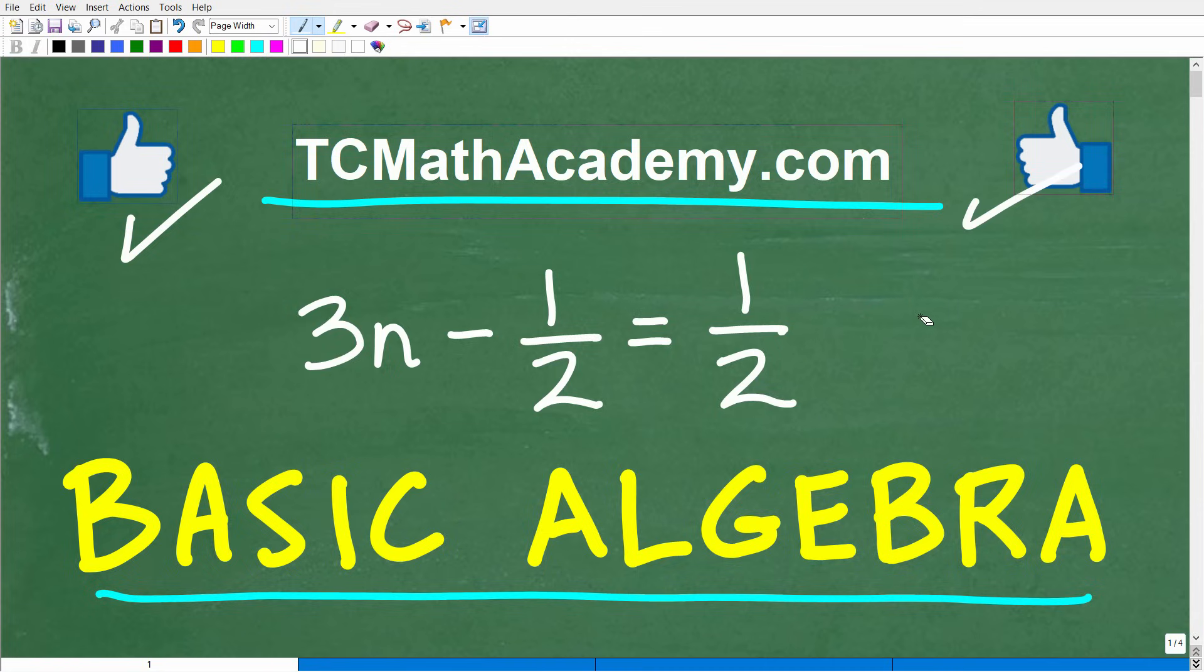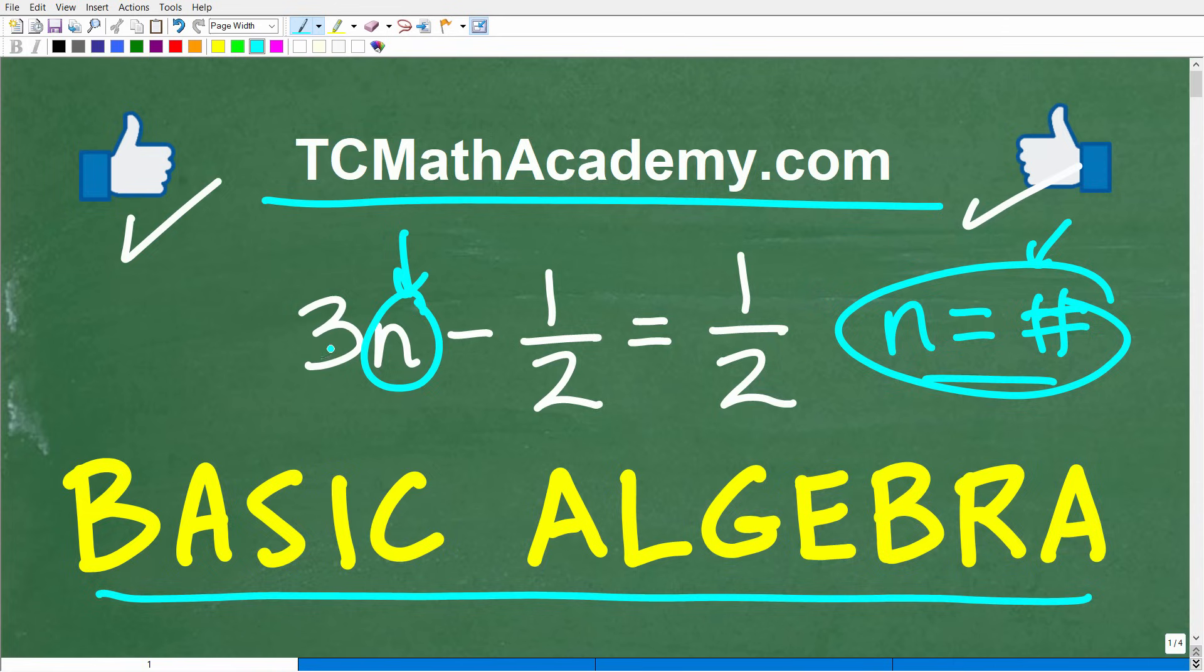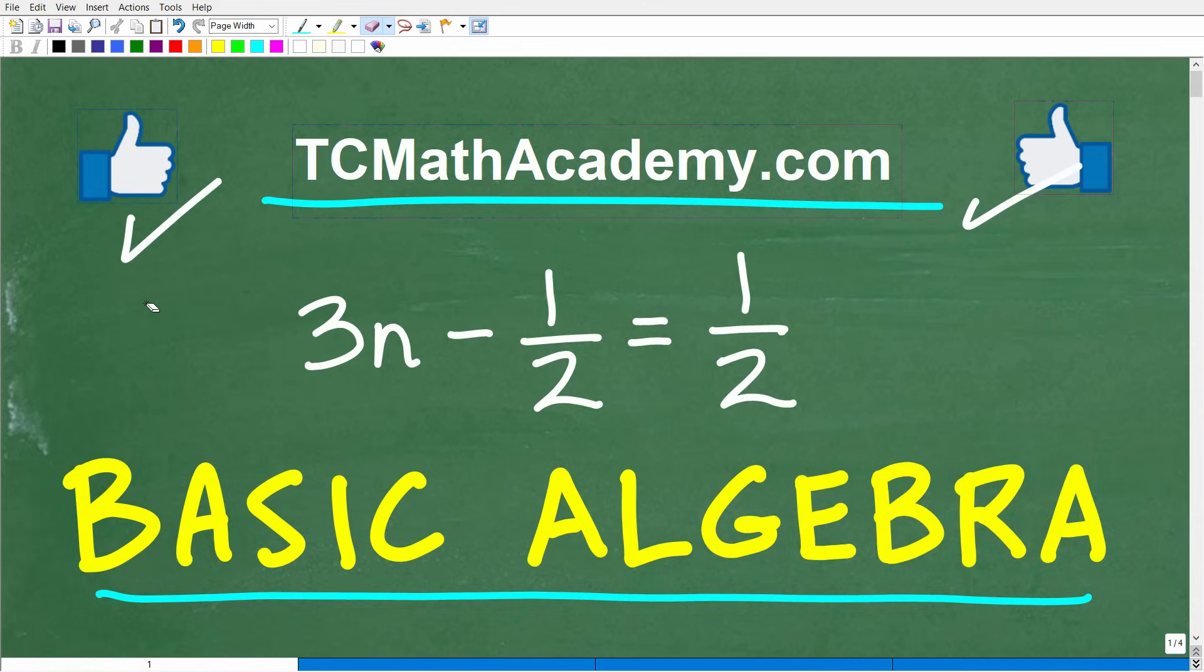Okay, so 3n minus 1 half is equal to 1 half. The object here is to figure out what n is equal to. So n is going to be equal to some number. That number, that value, is called the solution to this equation. So what happens is, when we have this number, if I replace this n with the actual solution, I'll go 3 times that mystery number minus 1 half. This value will end up being the same as this value, i.e. 1 half. That's how you check a solution, or if you have the correct solution, to an equation. But that's kind of a separate little topic. But let's go ahead and see the answer to this equation.